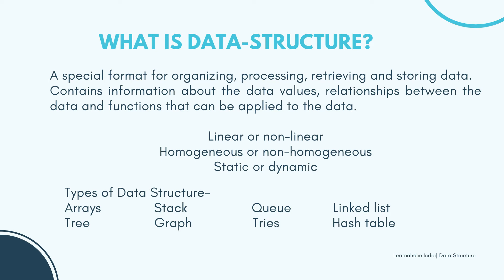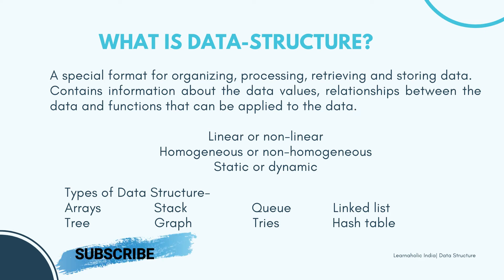Next is queue. A queue stores a collection of items similar to a stack. However, the operation order can be first in first out. Next is linked list. A linked list stores a collection of items in a linear order. Each element or node in a linked list contains a data item as well as a reference or link to the next item in the list.